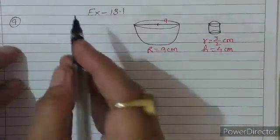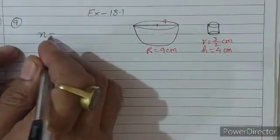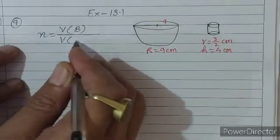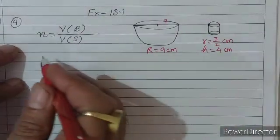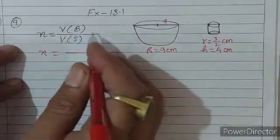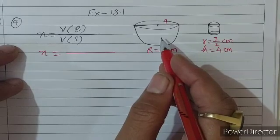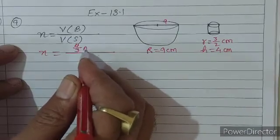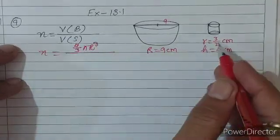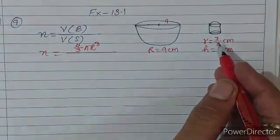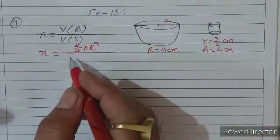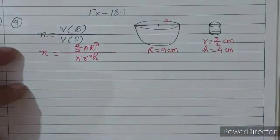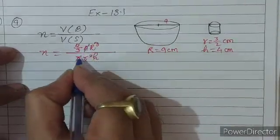यहाँ पर सीधे लिखेंगे: number of bottles = volume बड़ा (ऊपर) / volume छोटा (नीचे)। बड़ा volume hemisphere है, hemisphere के volume का formula होता है 4/3 π r³। Small cylinder का volume = π r² h। यहाँ π से π cancel हो जाएगा।